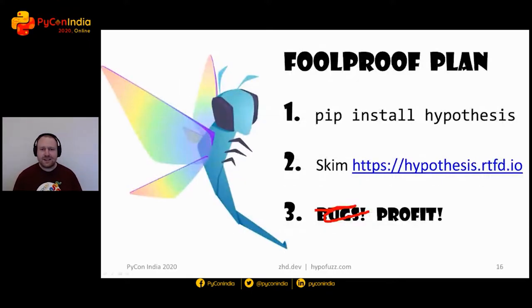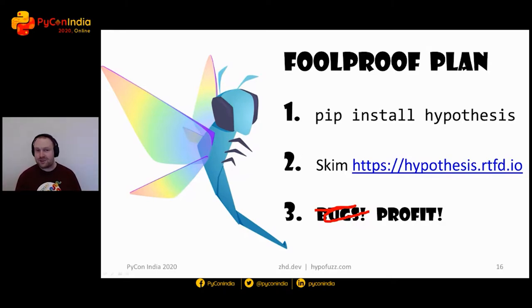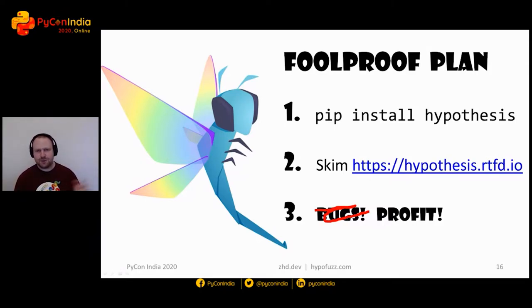Here's the foolproof plan. Step one is to install Hypothesis. Hypothesis is Python's leading — and I think in fact only — library for property-based testing. That's just pip install hypothesis. If you're on Python 3.6 or later, you'll get the latest version. If you're on an older version, 3.5 or 2.7, you'll get whatever the latest version was when they went out at end of life. Then you can read the documentation and then profit.